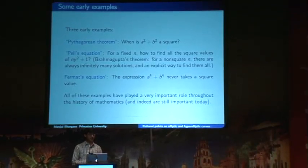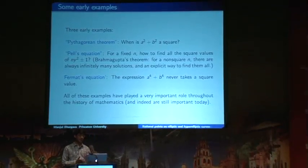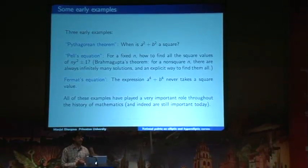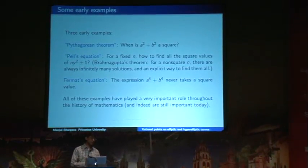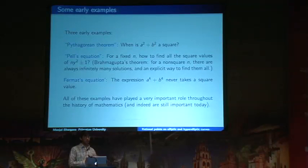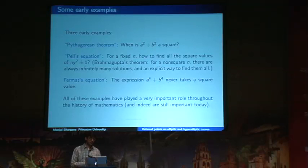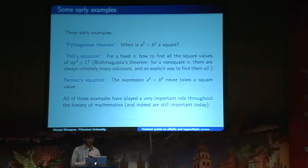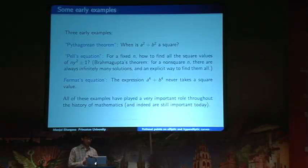This equation has had a lot of influence in the context of Fermat's Last Theorem. All three — the Pythagorean triple problem, Pell's equation, and Fermat's equation — and many other examples, have played a very important role throughout the history of mathematics. Not just in number theory, but in many other related branches. And in fact, they're still very, very important today.